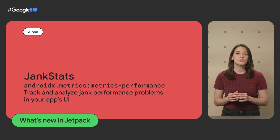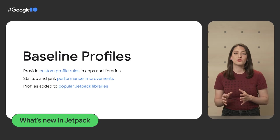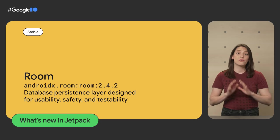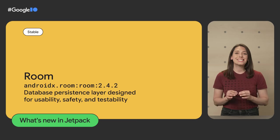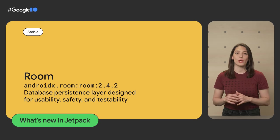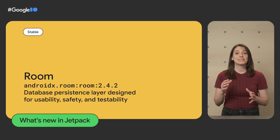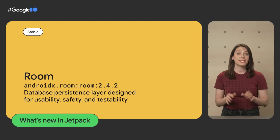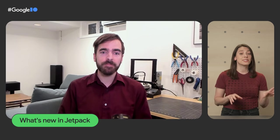The new JankStats library helps you track and analyze performance problems in your apps. To make your app load faster and reduce dropped frames the first time a user interacts with your app, we created baseline profiles. Jetpack libraries got a lot of updates as well — Room 2.5 brings the initial stages of a full Kotlin rewrite, stable support for KSP, and relational query methods. With the latest navigation library, you can support multiple backstacks without any code changes and easily implement a two-pane layout. Check out the What's New in Jetpack talk for all architecture and testing update details.